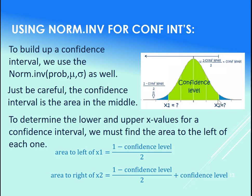Now, this guy, area to the left of it, will be this blue area right here, plus the whole confidence interval. So take what we found here, add to it the confidence level, and that will give us our area to the left. Or sorry, the area to the left of it. Good. So the area to the left.